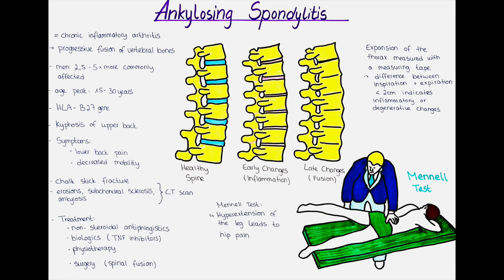To recap briefly: ankylosing spondylitis is a chronic inflammatory arthritis affecting the axial skeleton and can lead to progressive fusion of the vertebral bones. The exact causes are not fully known, but genetics and environmental factors play a role. Diagnosis is by clinical signs and imaging techniques — initially MRI, and later CT scans and X-rays. The treatment is multidisciplinary and includes pharmacological, physiotherapeutic and surgical options, aiming to reduce pain, maintain spinal mobility and prevent spinal deformities.